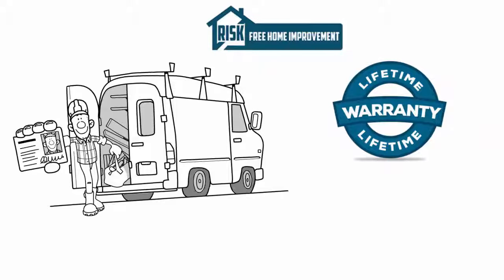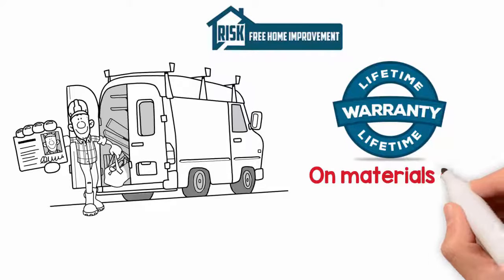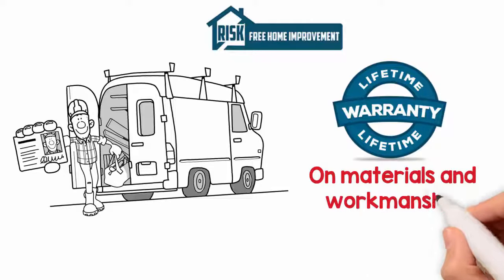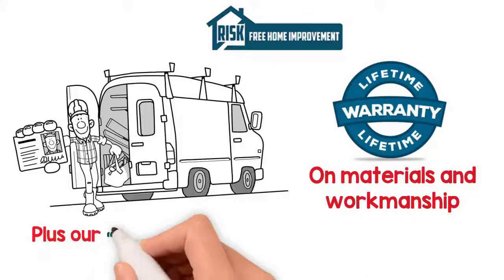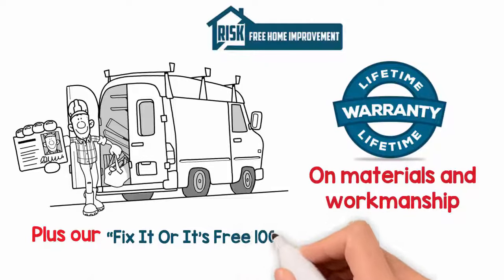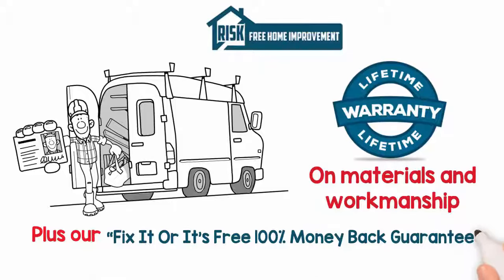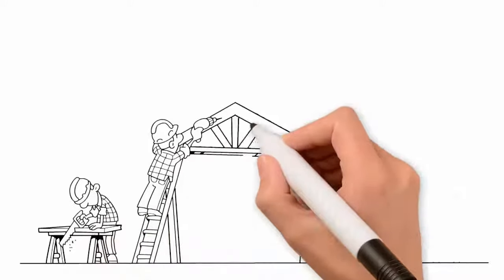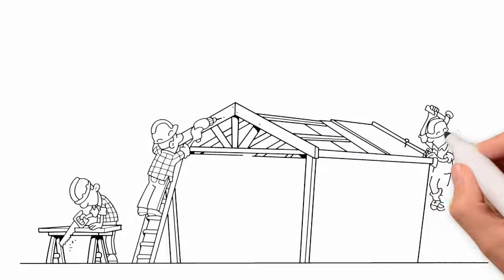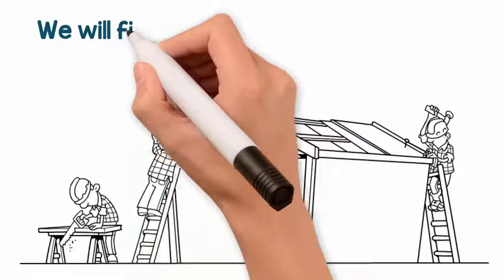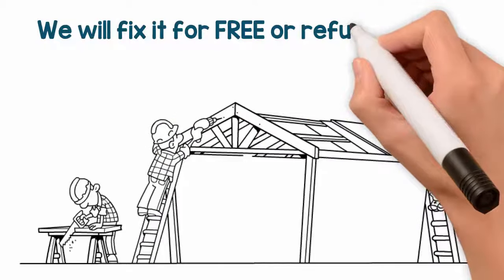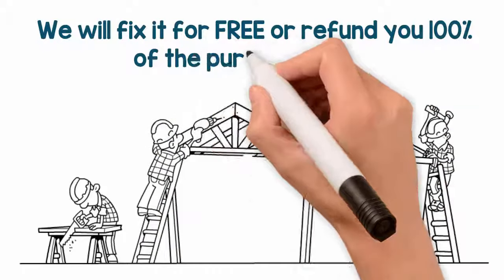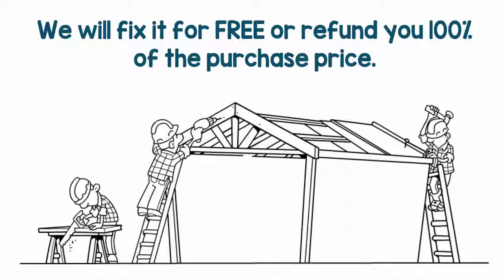Every roofing project that we do comes with a lifetime warranty on the materials and the workmanship. We then take it one step further and give you a fix it or it's free 100% money back guarantee. If something happens to your roof due to poor workmanship, we will fix it for free. If we are unwilling or unable to fix it, then we will refund 100% of your purchase price. Talk about peace of mind!